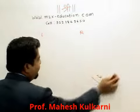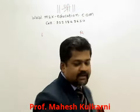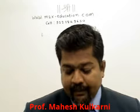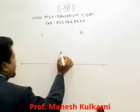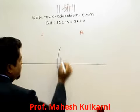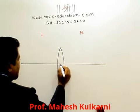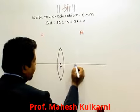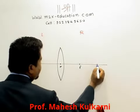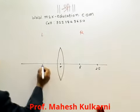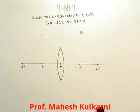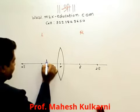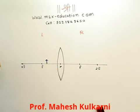Now the second diagram. This is just to explain how images are formed. We are following Cartesian Sign Convention again. I am marking P here. Now I am placing the object between F and 2F — specifically between F and P.